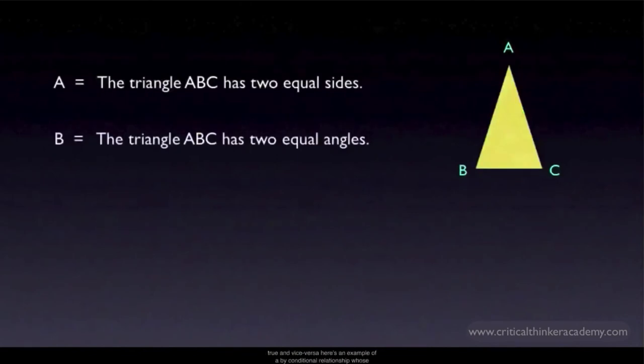Here's an example of a biconditional relationship whose truth is obvious. Let A be the claim that triangle ABC has two equal sides. Let B be the claim that triangle ABC has two equal angles. It's clear that if A is true, then B is also true. Besides, AB and AC are equal. From the diagram, you can see this requires that the angles at B and C must also be equal.